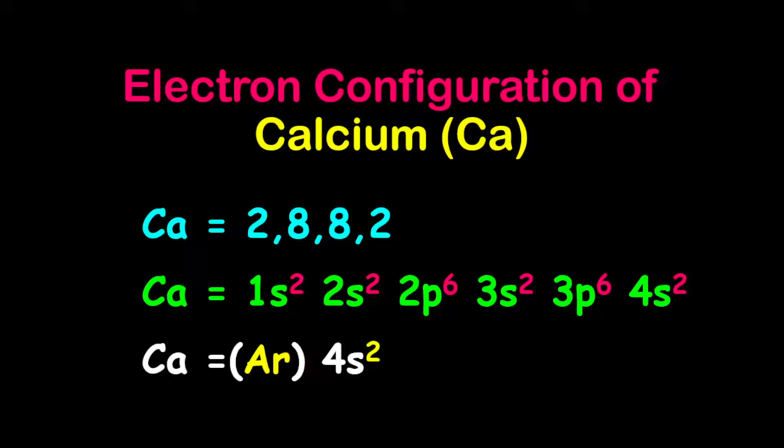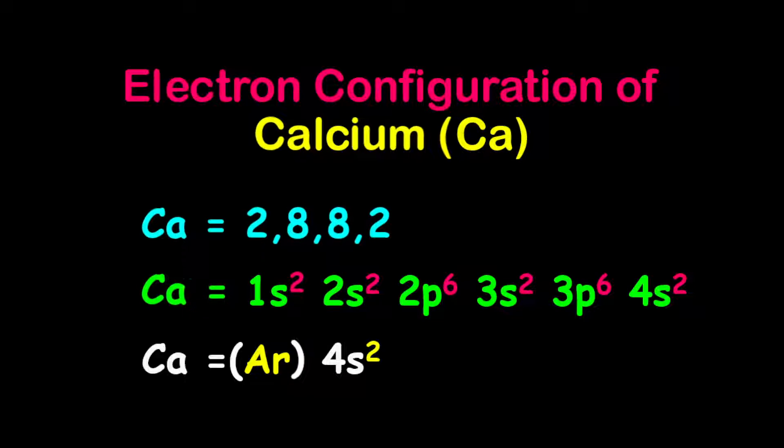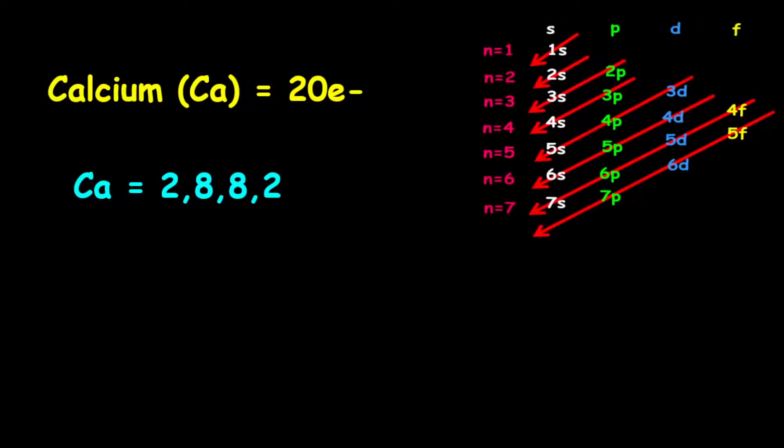The electron configuration of calcium. Calcium has 20 electrons: 2 electrons on the first shell, 8 electrons on the second, and also 8 electrons on the third shell, and 2 electrons on the fourth shell. Therefore, the electron configuration is given as 2882.